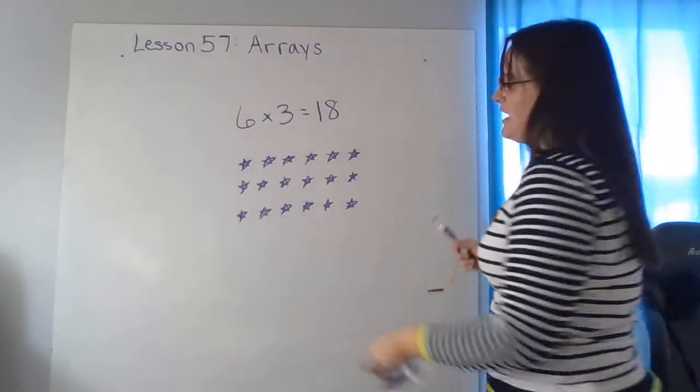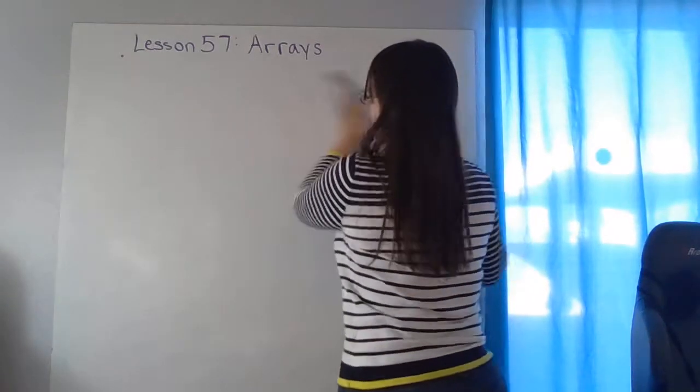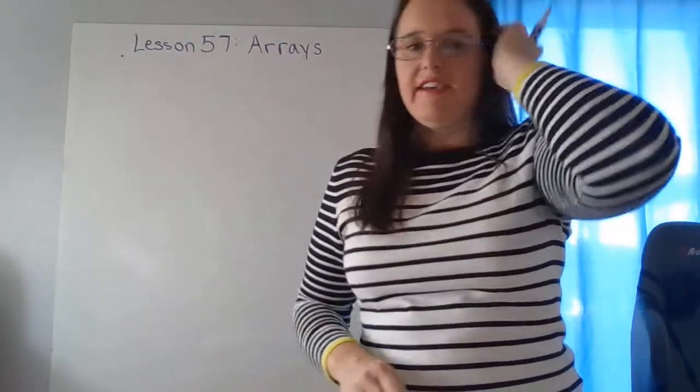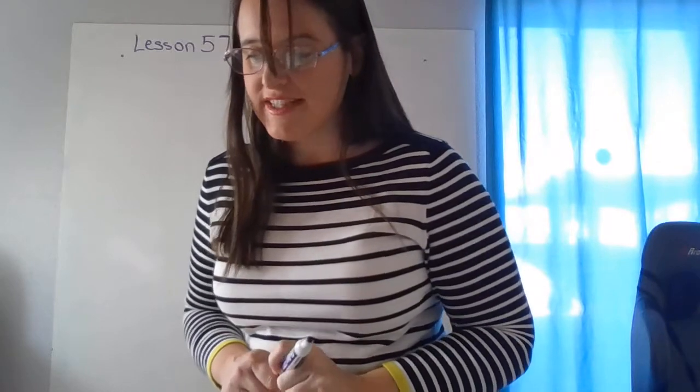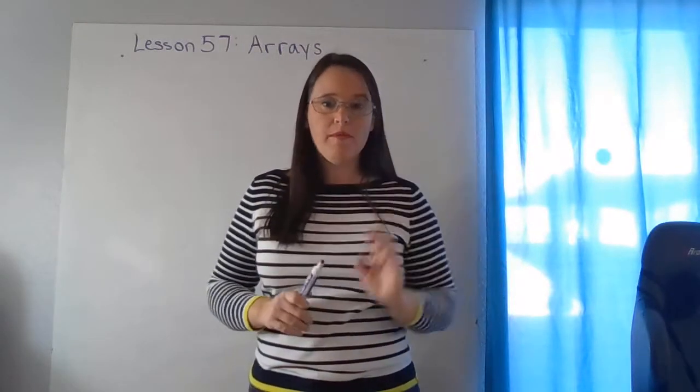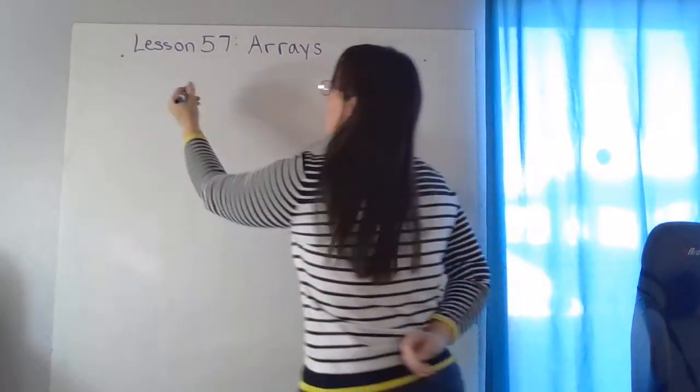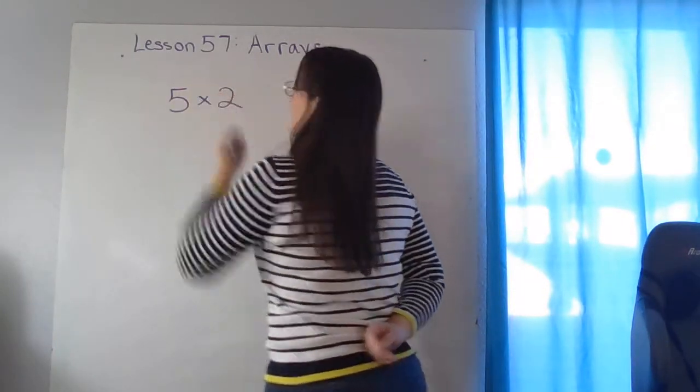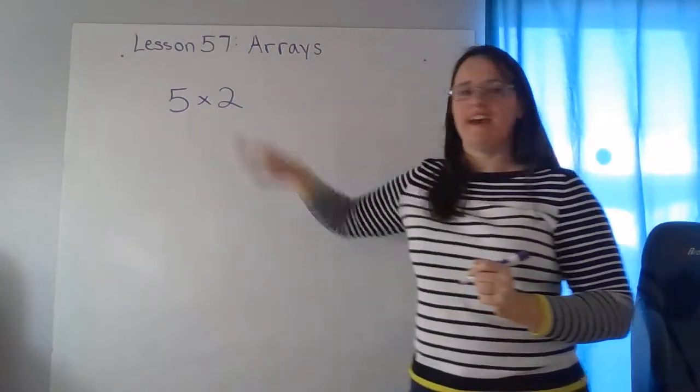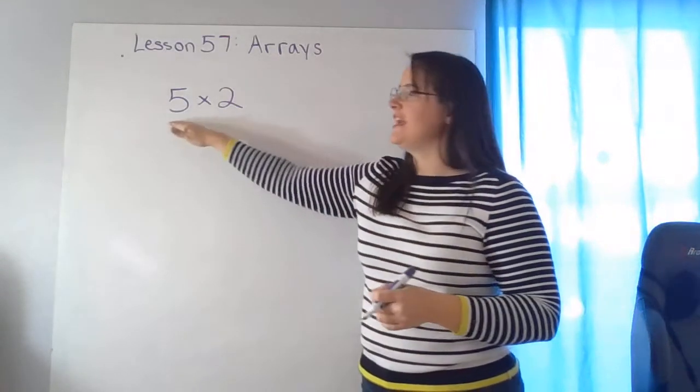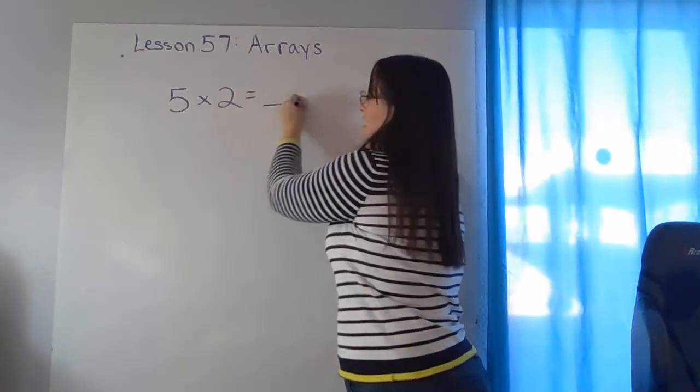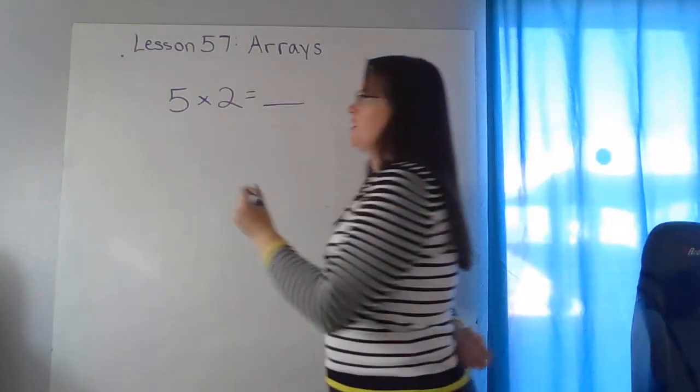Okay, I'm going to have you create a couple more arrays today. The directions here say use your objects to make an array for each pair of factors. For each array, write a multiplication fact on your paper that shows both factors and the product. So you're going to write the whole multiplication fact. So our first one is five times two. They give us the factors. You're going to show me your array with your objects. And then you'll have to write the whole multiplication fact including the answer. Go ahead and work on that now.